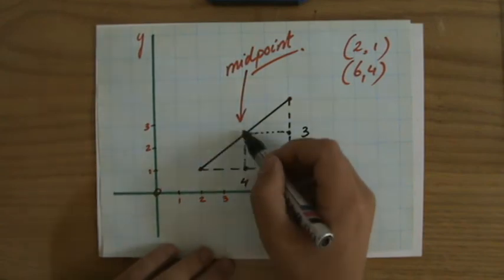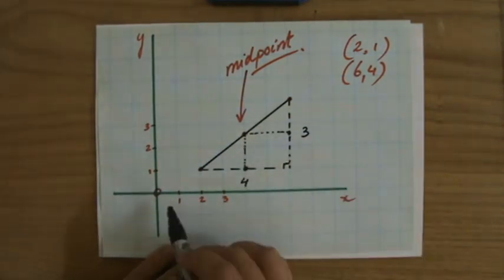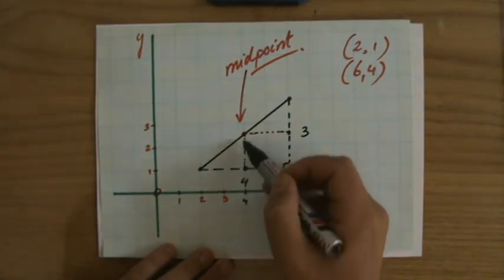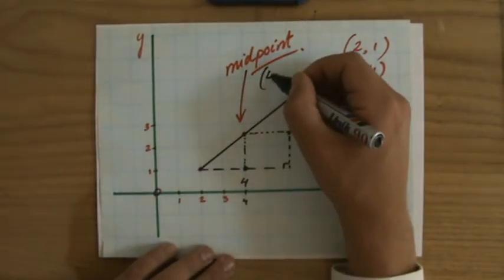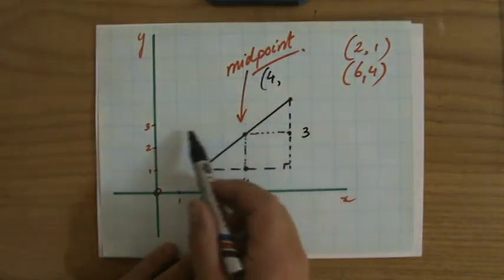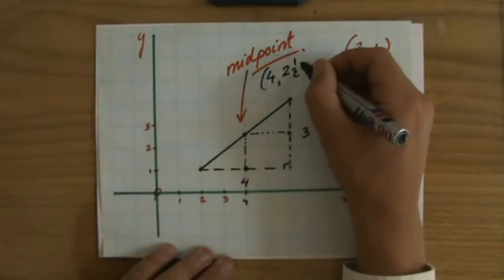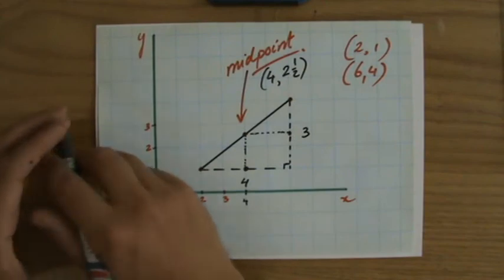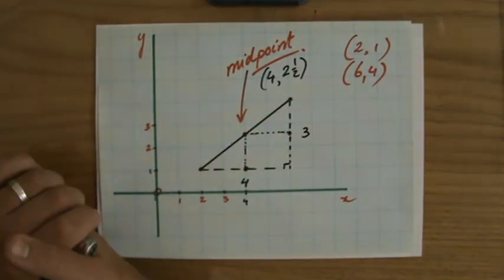The midpoint, you have to give it as a coordinate. And if I look, what is the coordinate of this point? That will be at 4. So the x coordinate is 4, and the y coordinate will be 1, 2 and a half. So the answer is 4, 2 and a half. And I found that answer just by simply drawing it and having a proper look.